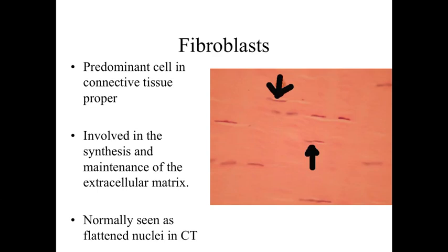The first type of resident cell we're going to look at are going to be the fibroblasts. The fibroblasts are going to be the predominant cell type in a connective tissue proper. Your basic generic connective tissue is going to have lots and lots of fibroblasts in it. It's going to be the fibroblasts that are going to be involved with establishing the connective tissue — synthesizing all of the proteins, all the ground substance, all the materials that are going into the connective tissue.